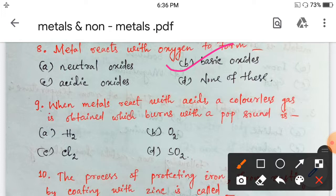And non-metals, when they react with oxygen, they form acidic oxides, and that converts blue litmus into red. Next, Question Number 9. When metals react with acids, a colorless gas is obtained which burns with a pop sound. Is it hydrogen, oxygen, chlorine, sulfur dioxide? It is your hydrogen gas, which is released and burns with a pop sound. Option A.